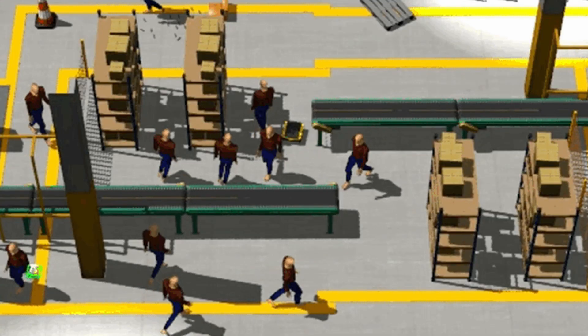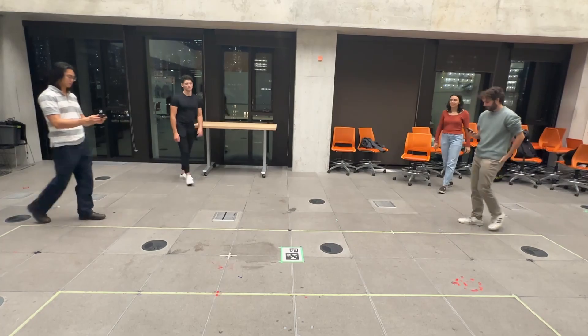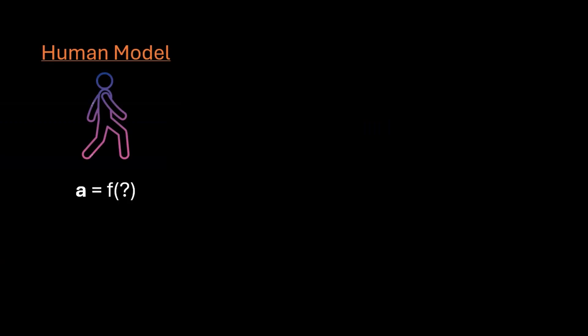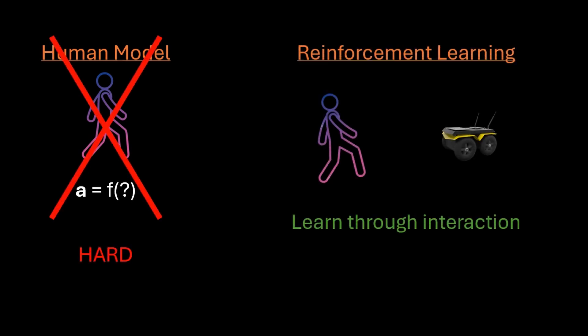Unlike simulators which assume non-realistic and cooperative human models, humans in the real world may be uncooperative and their motion is probabilistic. So rather than explicitly modeling humans, which is very difficult, we use reinforcement learning to learn from interaction.